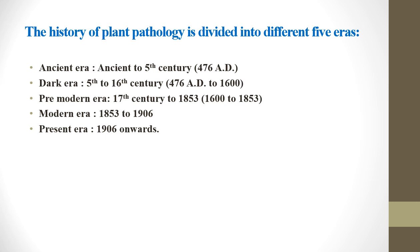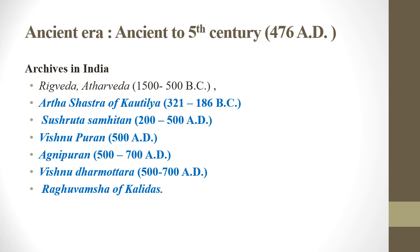The history of plant pathology is mainly divided into five eras: ancient era, dark era, pre-modern era, modern era, and present era. The ancient era covers up to the 5th century; the dark era spans the 5th to 16th century; the pre-modern era covers the 17th century to 1853; the modern era spans 1850 to 1900; and the present era covers 1900 onwards.